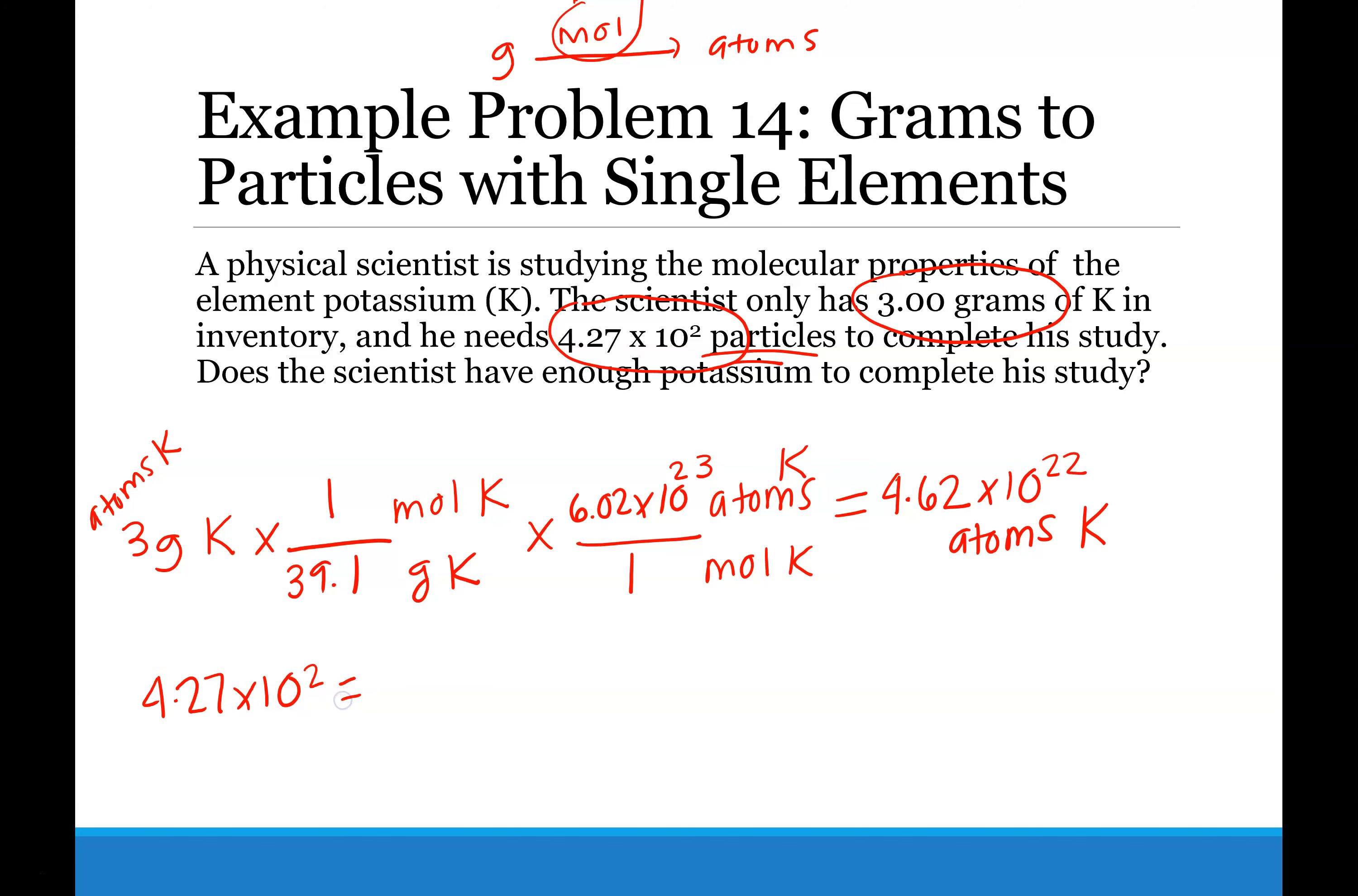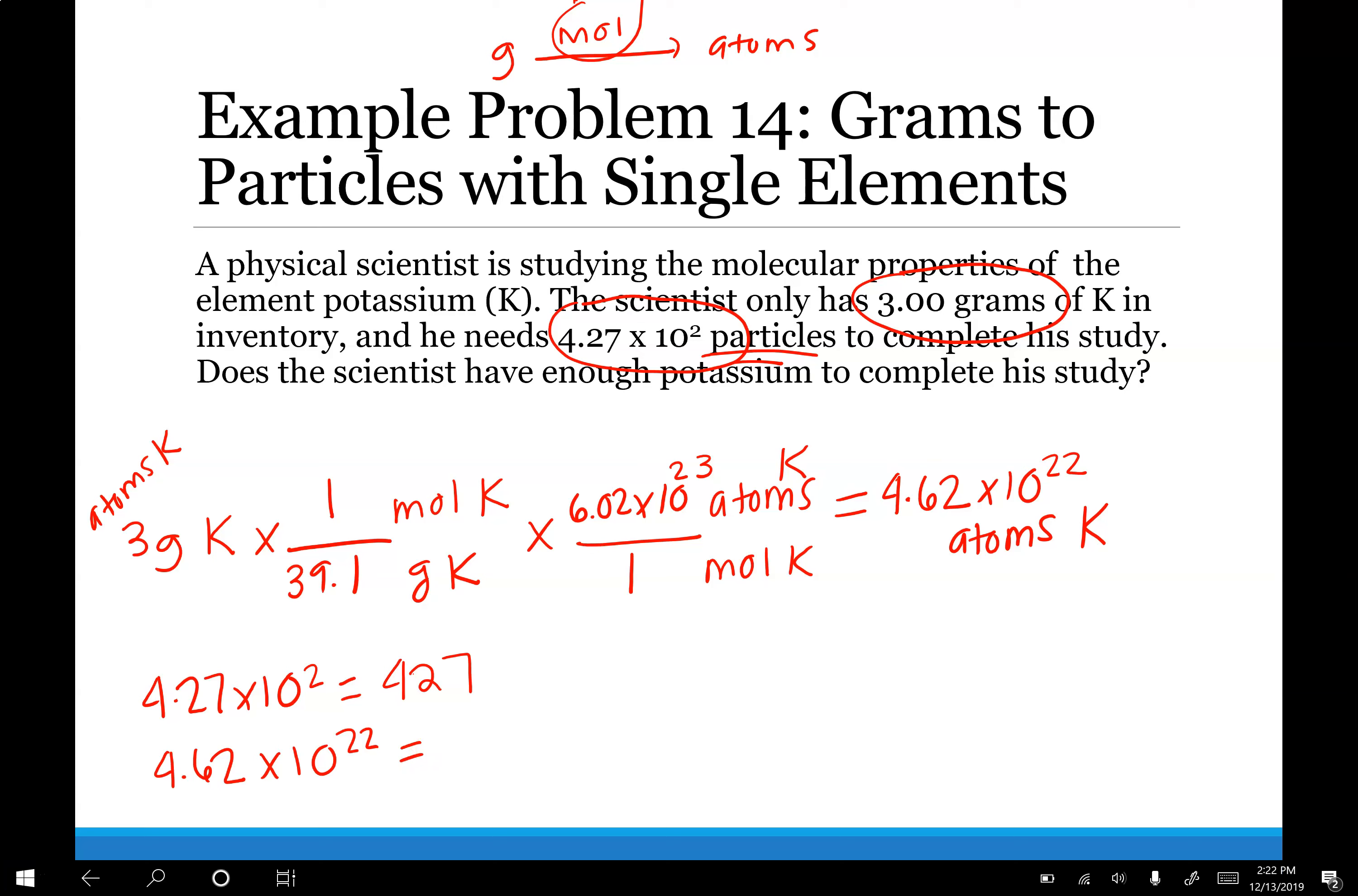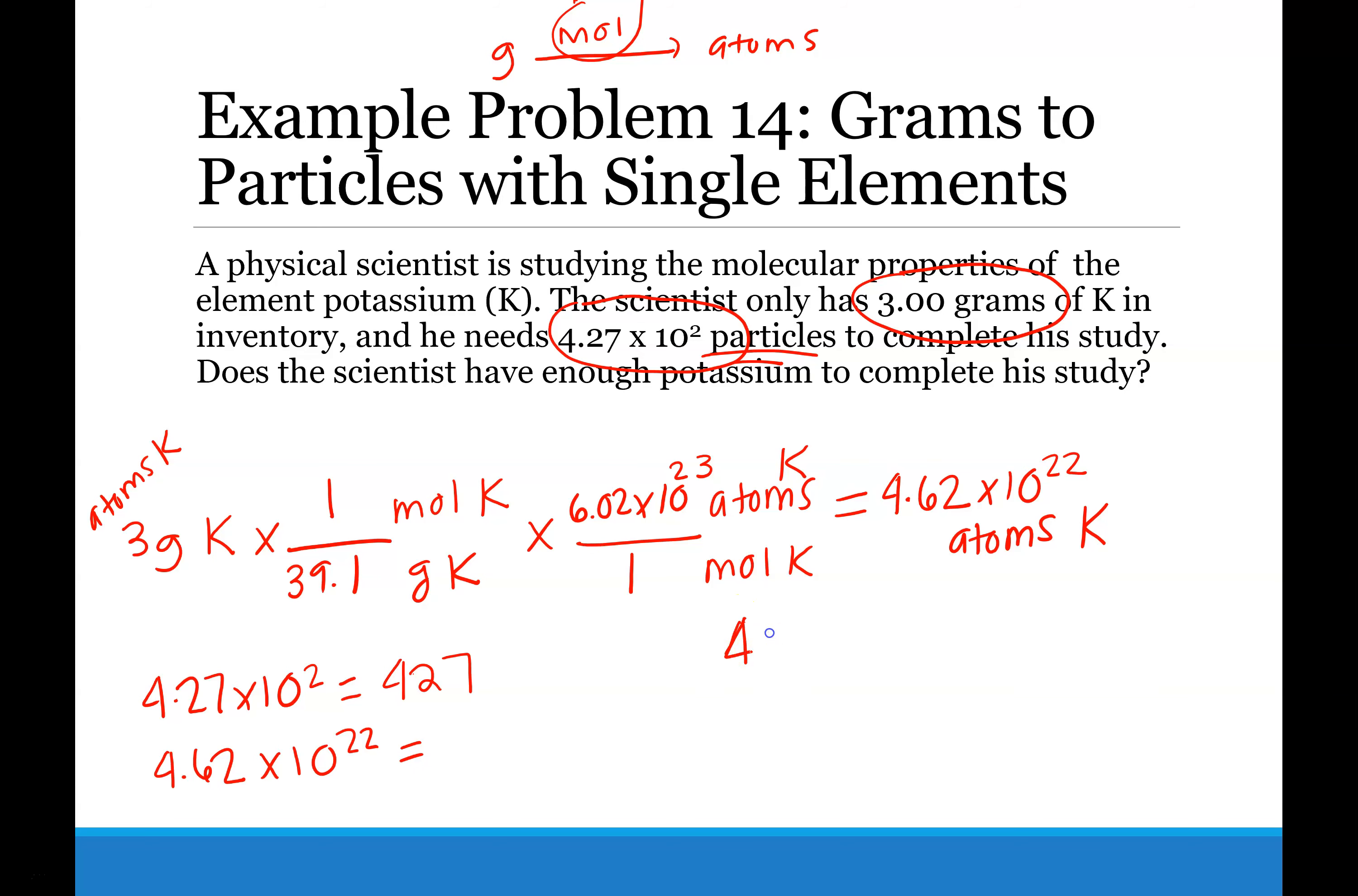is 427. So the number 4.62 times 10 to the 22nd is going to be a really big number. So you can imagine how we got 427 from 4.27 times 10 to the 2nd. It would go 1, 2, and so that would be 427.